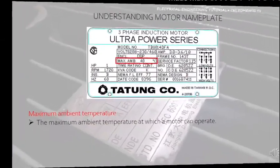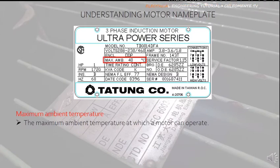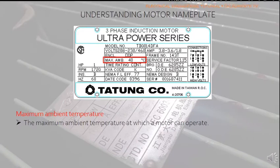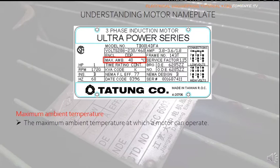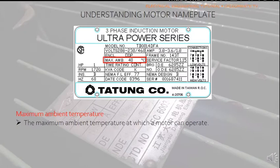Maximum ambient temperature, denoted by Max AMB: As the name implies, this is the maximum ambient temperature at which the motor can operate. Above this temperature, depending on the motor's insulation, degradation of insulation life may occur and in the long run may cause winding failure. If this data is not given on the nameplate, it is safe to assume the motor is rated at a maximum ambient temperature of 40 degrees Celsius.